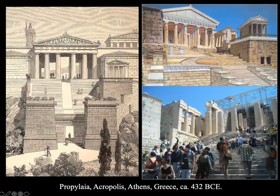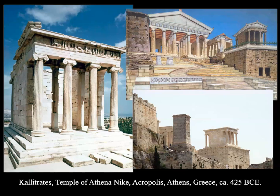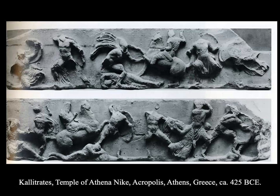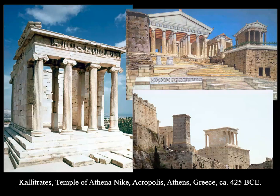That tiny little temple next to the Propylaia is the Temple of Athena Nike. This temple was built to greet visitors and commemorated the victory over the Persians. On this particular temple, there is a set of relief sculptures representing the Battle of Marathon and the victory over the Persians. It became a monument to that defeat as you entered into the Acropolis. The temple features ionic columns on the front and back.